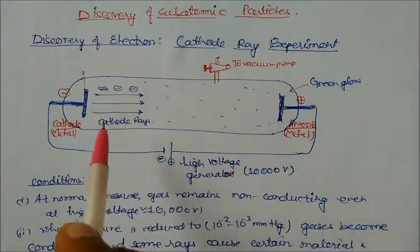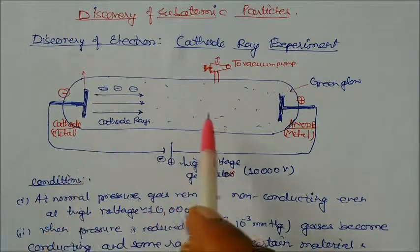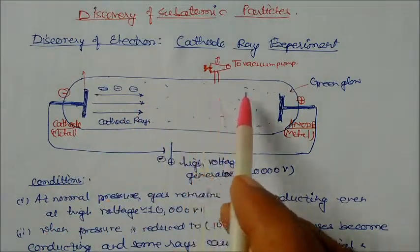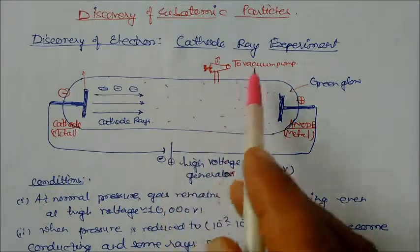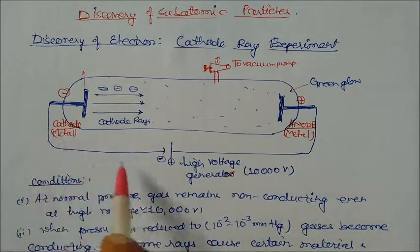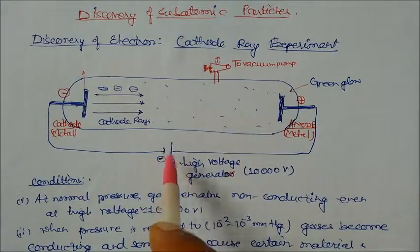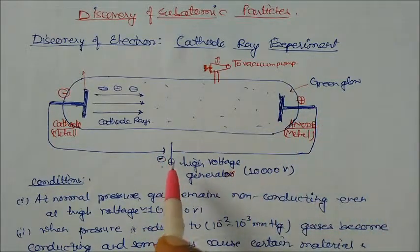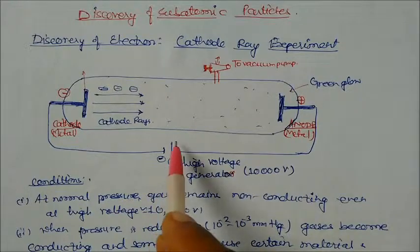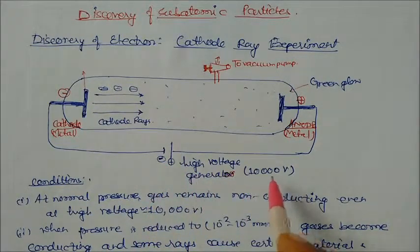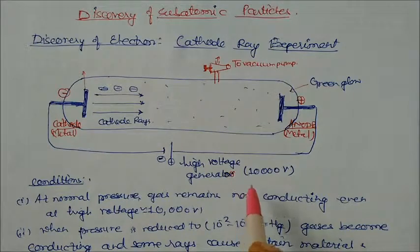The discharge tube consists of one cathode and one anode. This is a previous model used by scientists. There is a vacuum pump through which we can control and reduce the air inside. The negative terminal is connected to the negative terminal of the battery, and the positive terminal is connected to the positive terminal. This battery has a voltage of 10,000 volts, which is very high.